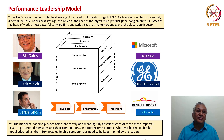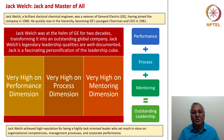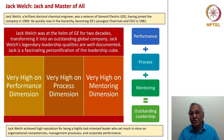Let us look at Jack Welch — a master of all. He was a brilliant doctoral chemical engineer and a veteran of General Electric, joining the company in 1960. He quickly rose in the hierarchy, becoming the youngest chairman and CEO of GE in 1981. Jack Welch was at the helm of GE for two decades, transforming it into an outstanding global company. His legendary leadership qualities are well documented — he is a fascinating personification of the leadership cube, particularly the performance leadership cube.